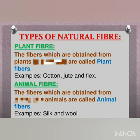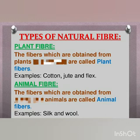As natural fibers are obtained from either plants or animals, the fibers obtained from plants — such as jute, cotton, and coconut fibers — are called plant fibers. Whereas fibers obtained from animals, such as wool and silk, are called animal fibers.